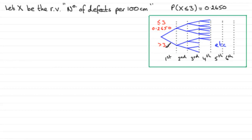And the probability being more than 3 must be 1 minus 0.2650, and that comes to 0.7350.